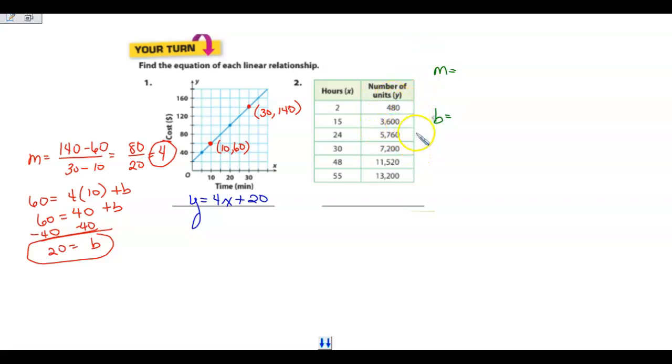So I can take any two points, and I can use that to find my slope. I'm going to pick this one and this one. So I've got 7,200 minus 3,600. And then I'm going to take 30 minus 15.